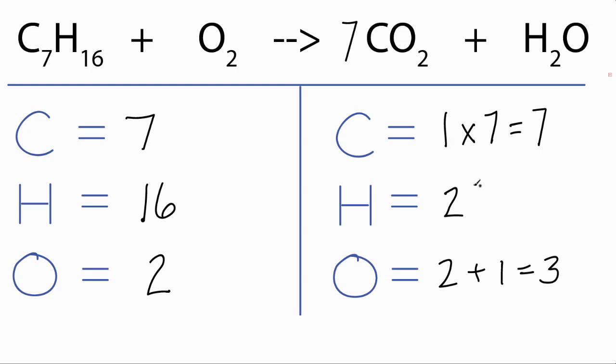And for the hydrogens, I have 16 on the left, on the reactants, only two on the right, so why don't we put an eight in front of the water. Eight times two, that equals 16. So now our carbons and hydrogens, they're both balanced, the oxygen's a little more challenging.